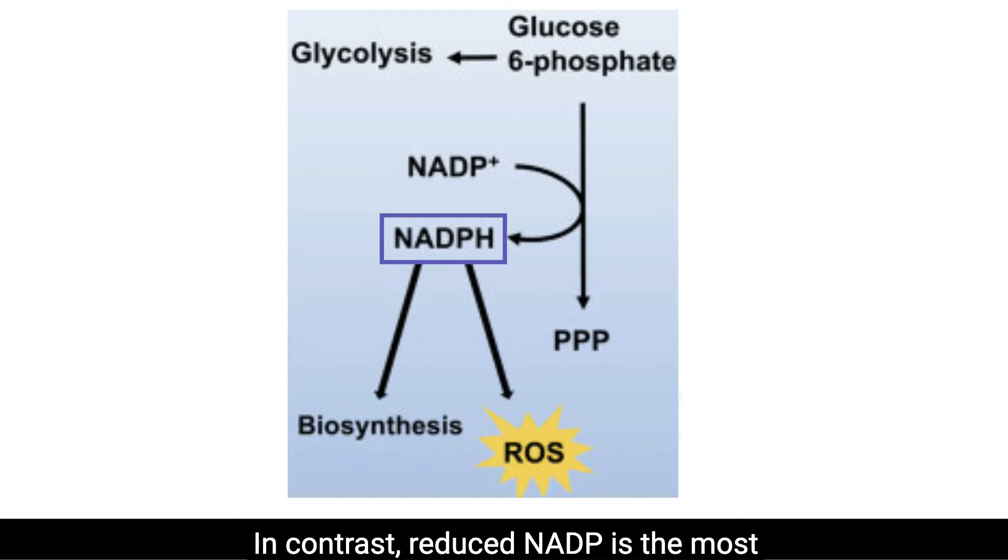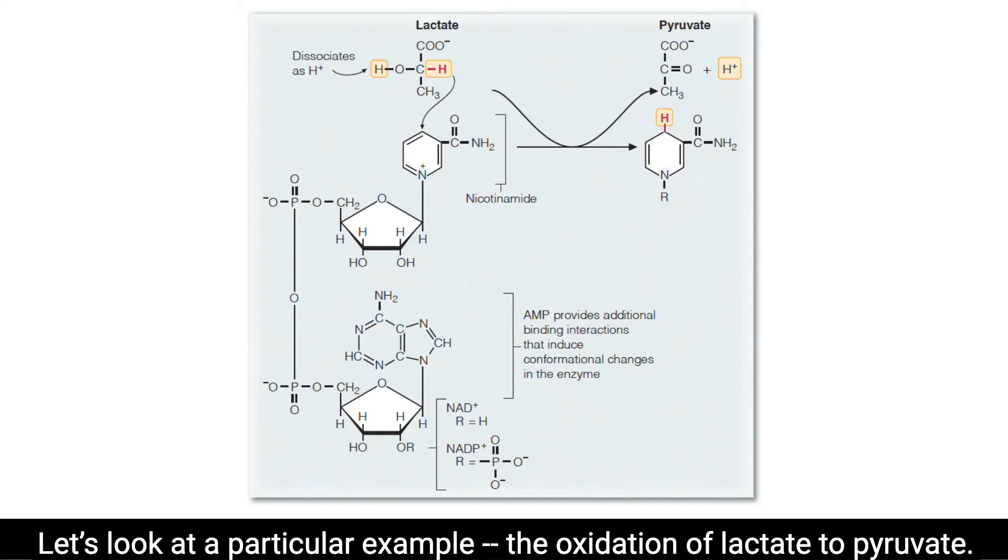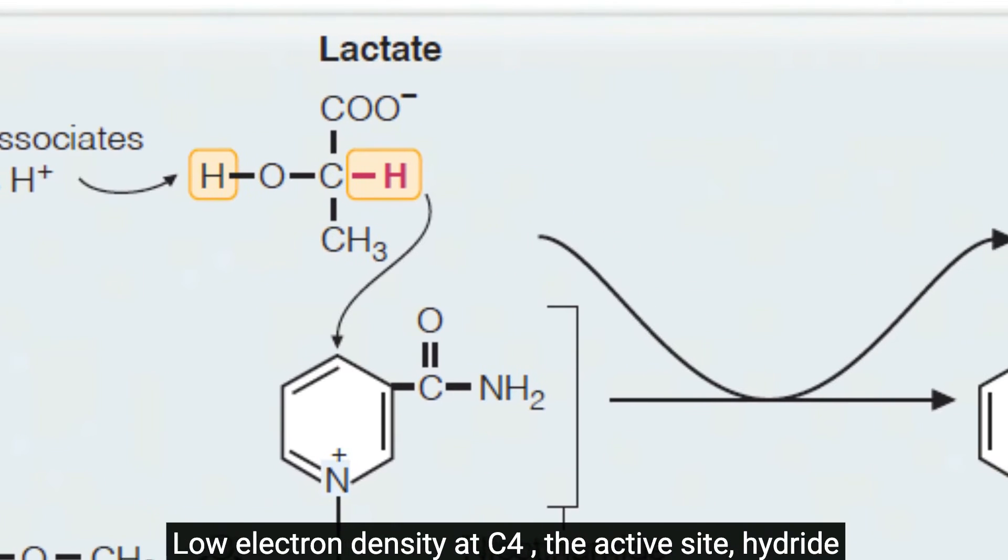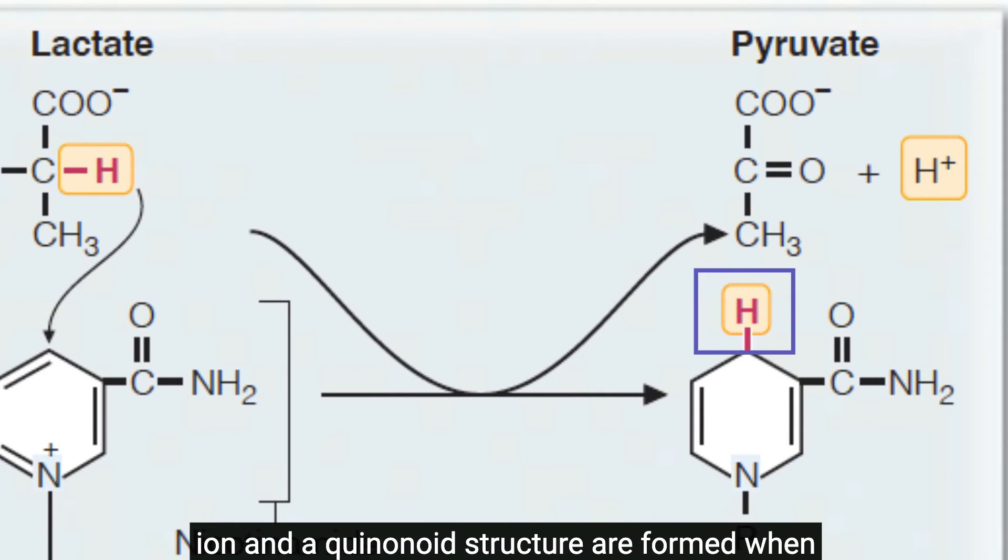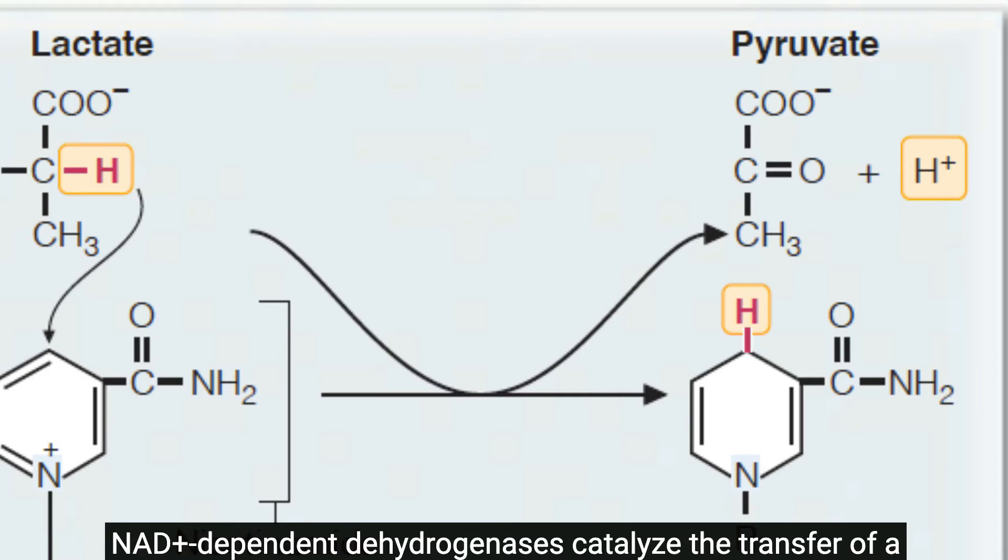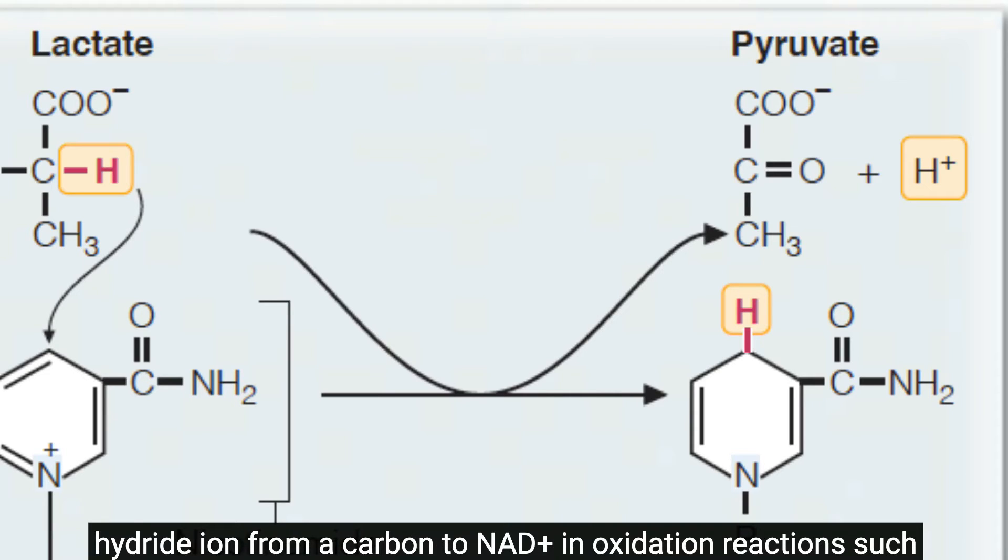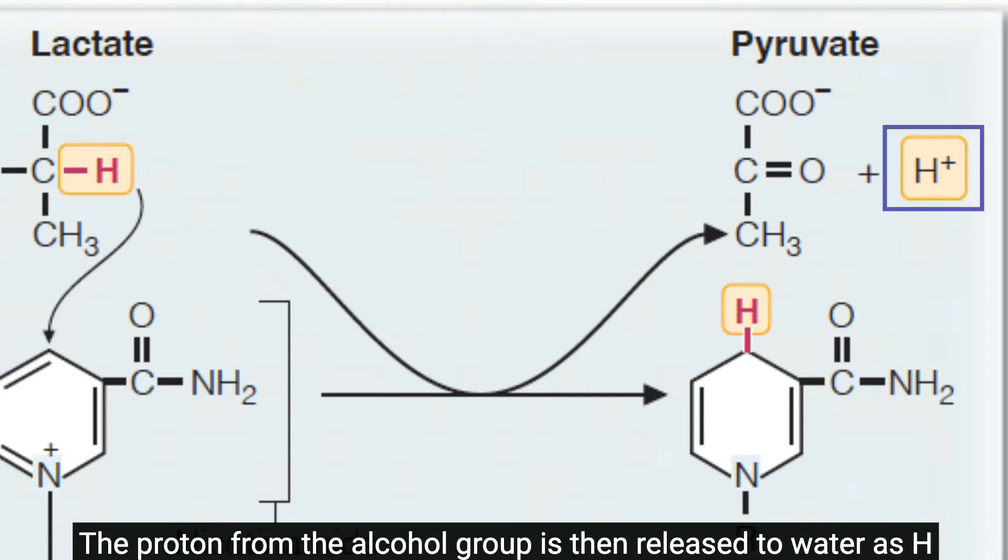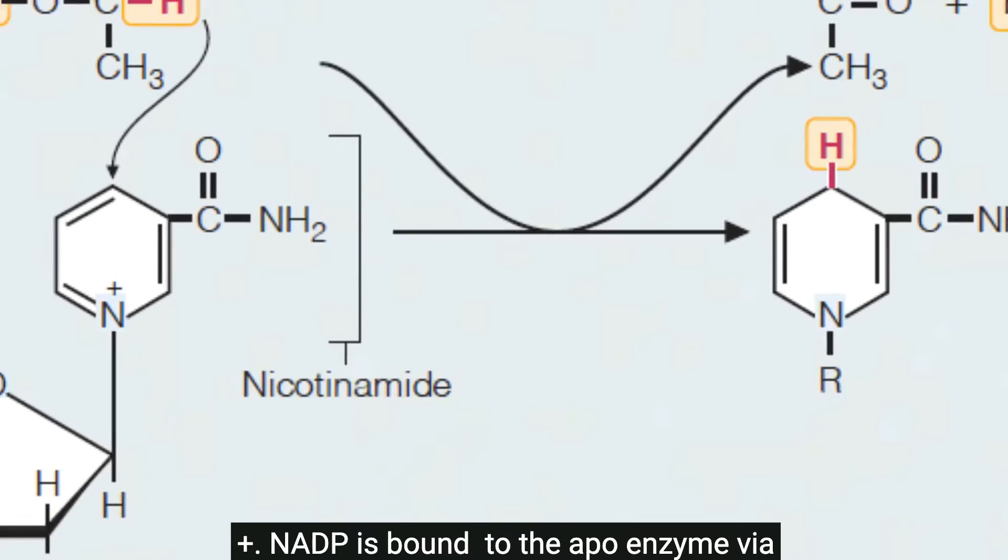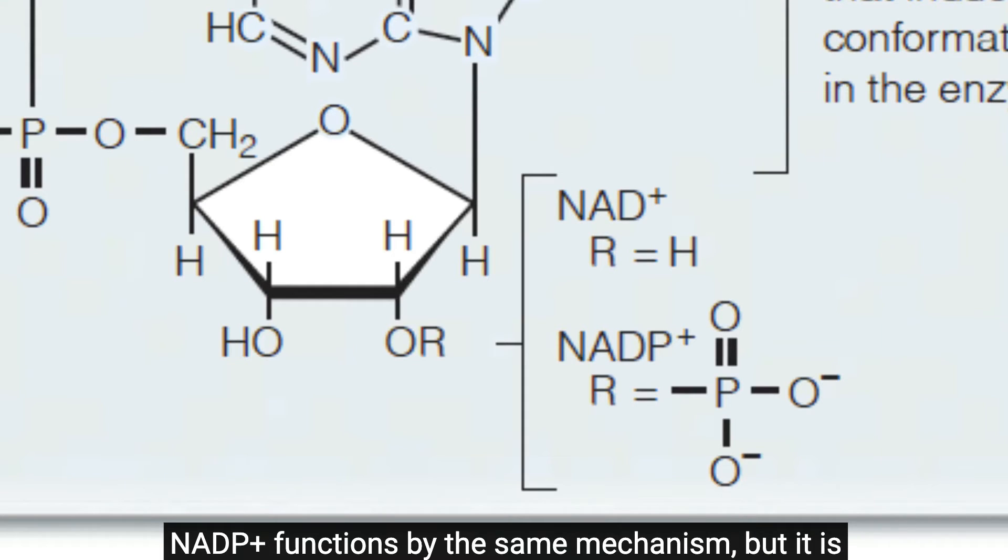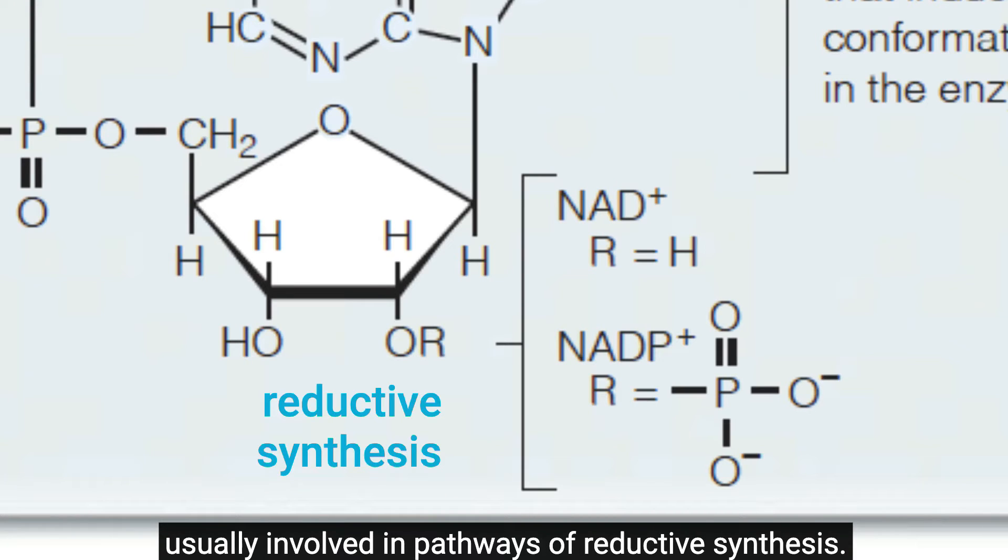In contrast, reduced NADP is the most important reductant involved in biosynthesis. Let's look at a particular example, the oxidation of lactate to pyruvate. The coenzyme NAD+ accepts a hydride ion from lactate at C4, the active site. A quinonoid structure is formed when electrons are given up from the aromatic pyridine ring. NAD-plus-dependent dehydrogenases catalyze the transfer of a hydride ion from a carbon to NAD+ in oxidation reactions, such as the oxidation of alcohols to ketones or aldehydes to acids. The proton from the alcohol group is then released to water as H+. NAD is bound to the apoenzyme via adenine, ribose, and pyrophosphate groups. NADP+ functions by the same mechanism, but it is usually involved in pathways of reductive synthesis.